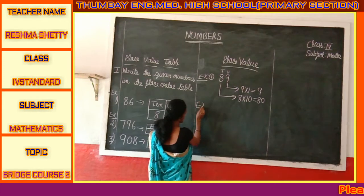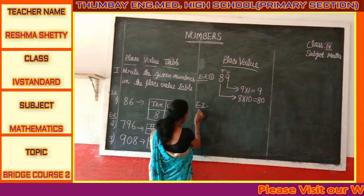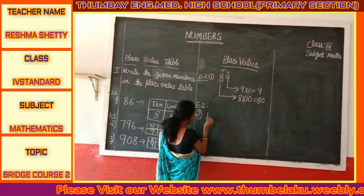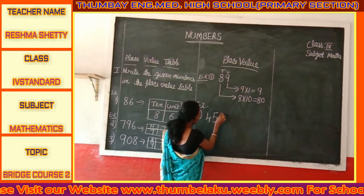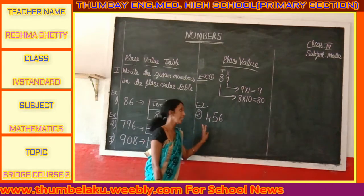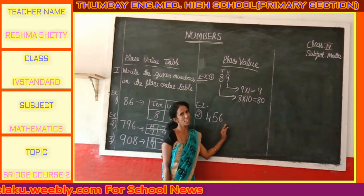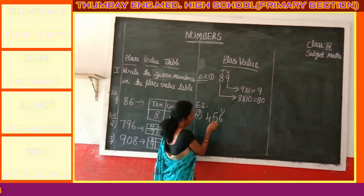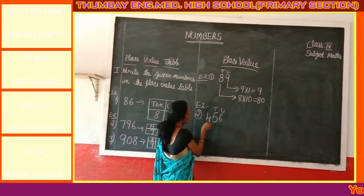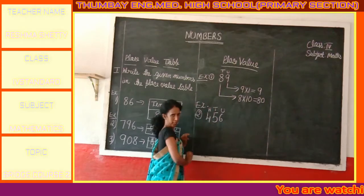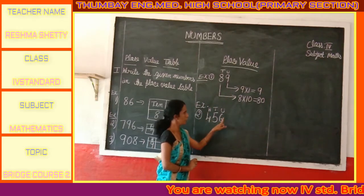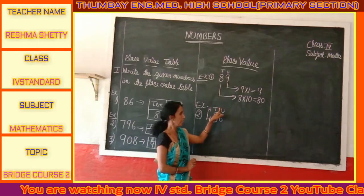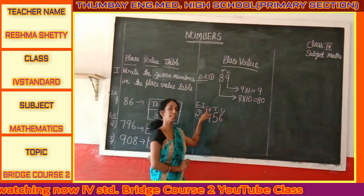Next, Example 2. Here I have a 3-digit number: 456. So we have units, tens, and hundreds. 6 is placed in the unit place, 5 is placed in the tens place, and 4 is placed in the hundreds place.